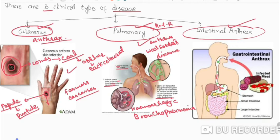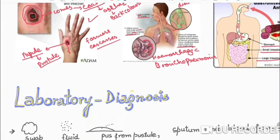Intestinal anthrax is very rare and more common in men. It occurs from eating infected meat, whereby spores travel from the infected meat to the stomach and then to the small and large intestines.